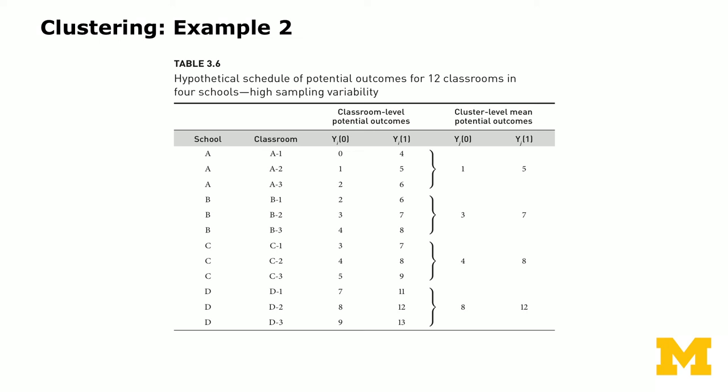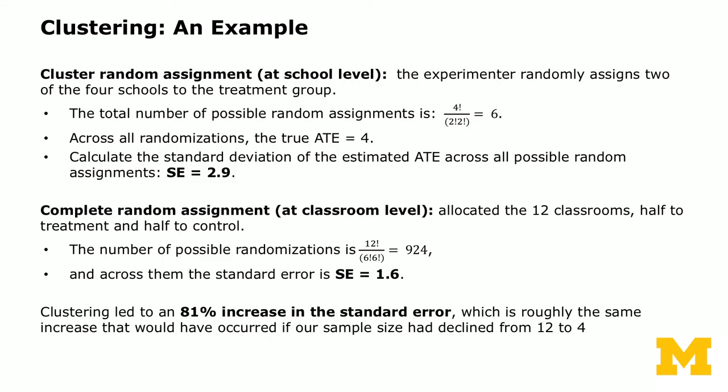Randomizing at the classroom level would give more power because there are more independent observations. However, the problem could be spillover effects, or more likely political feasibility. If classroom A1 gets an additional teacher while A2 and A3 are in the control group, parents would notice and complain. Therefore, in field experiments in education settings, experimenters often randomize the entire school as a cluster into treatment or control.